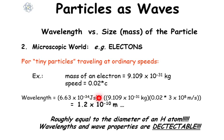Well, actually the wavelength if we put it into the de Broglie equation is 1.2 times 10 to the minus 10. Okay, still pretty small, but that's roughly equal to the diameter of a hydrogen atom, and the wavelengths and wave properties are detectable.